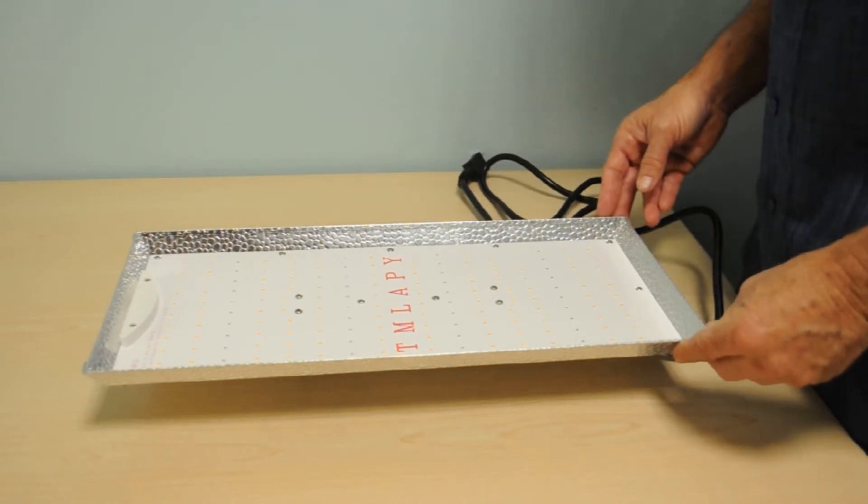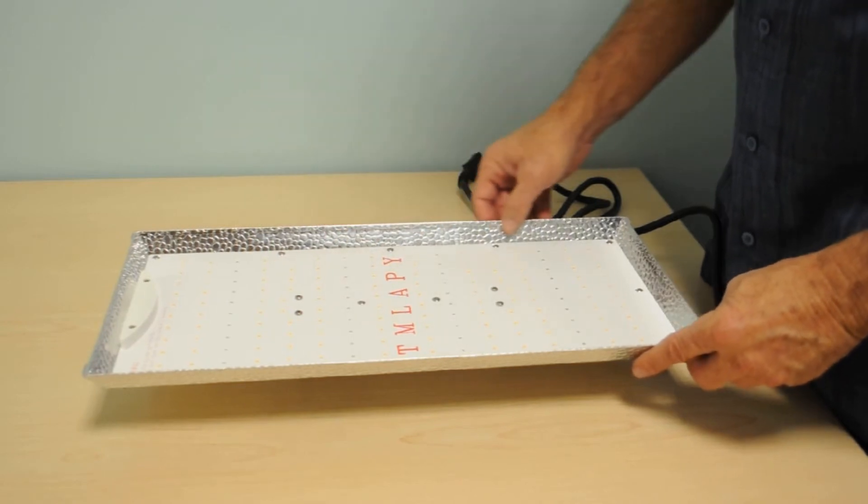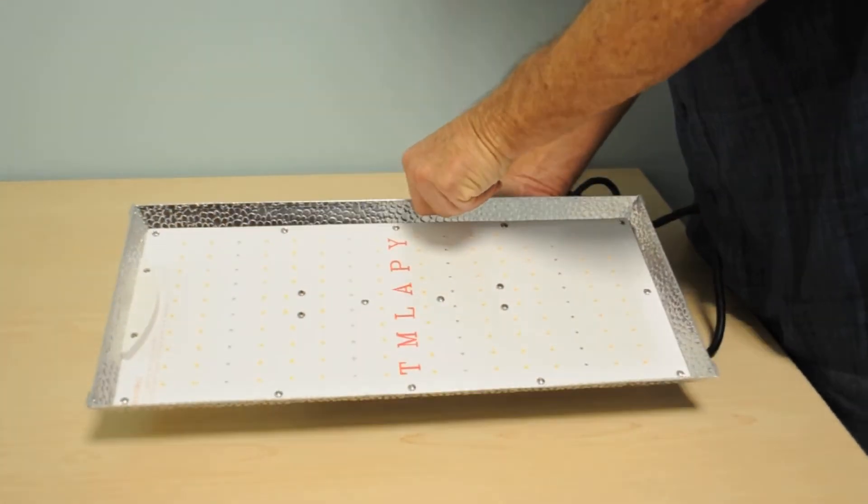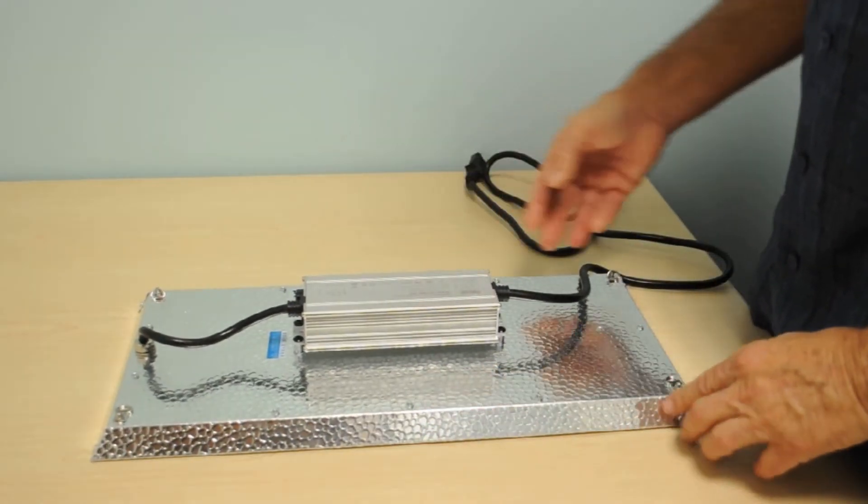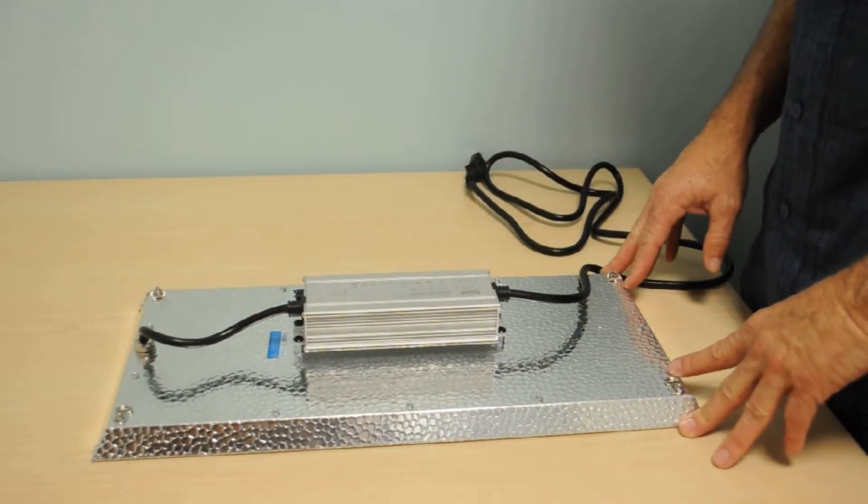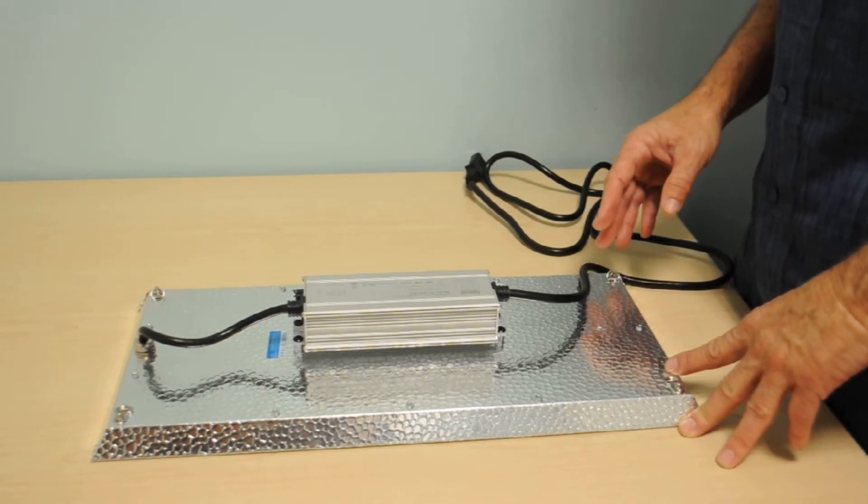The light does offer a reflector similar to the one found on the Mars unit, so that should help with the efficiency of the light. On the flip side, we have a Fahol driver, but only the driver—there's no dimmer switch or even an on-off switch for that matter.